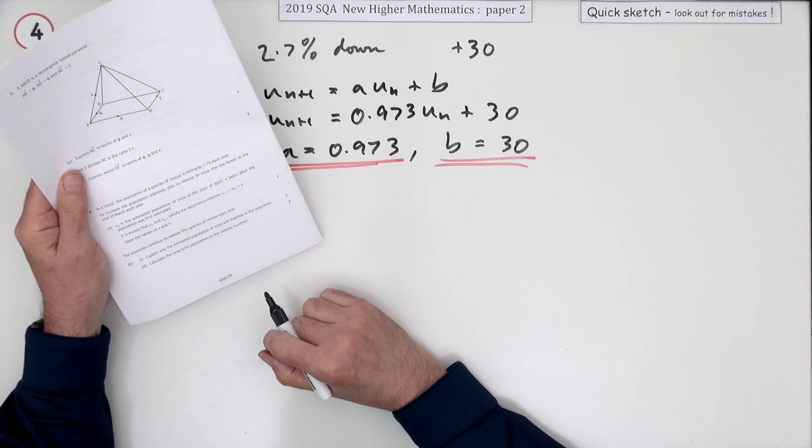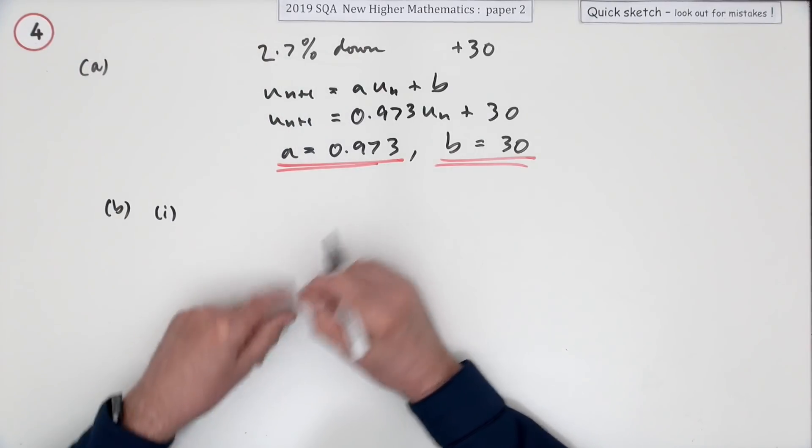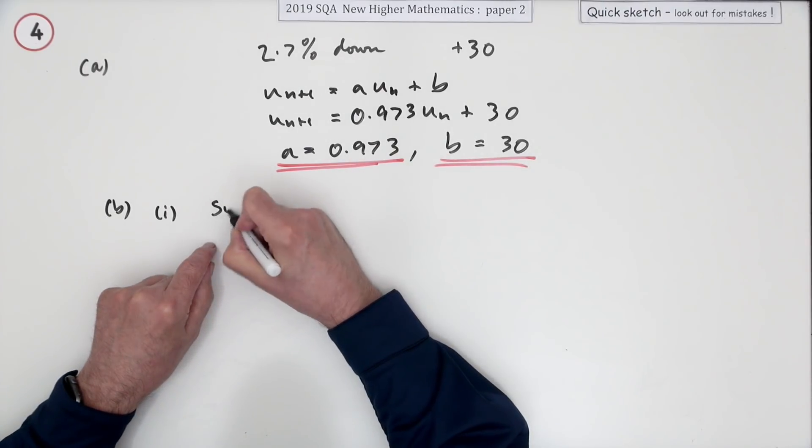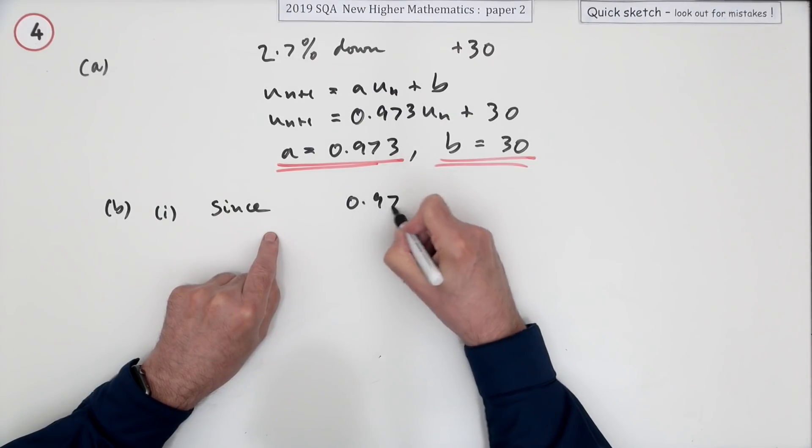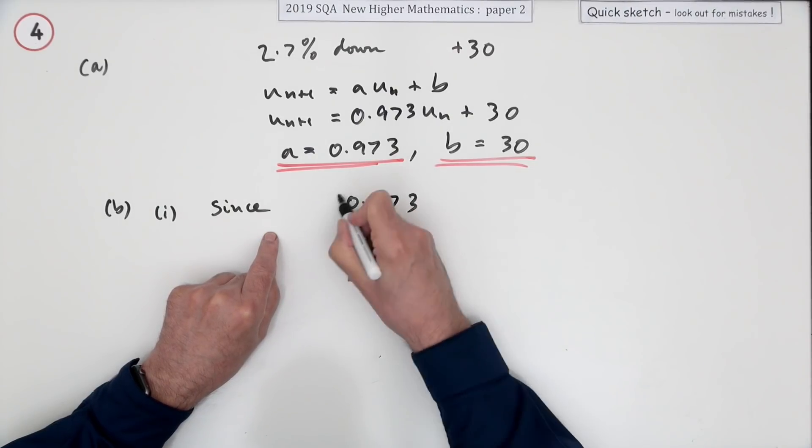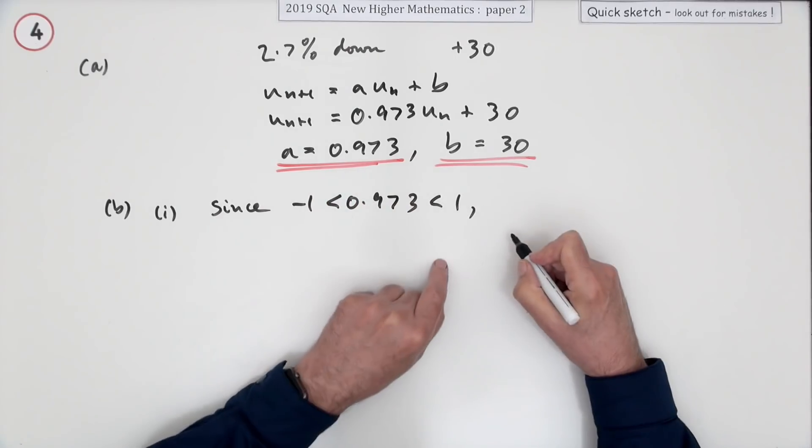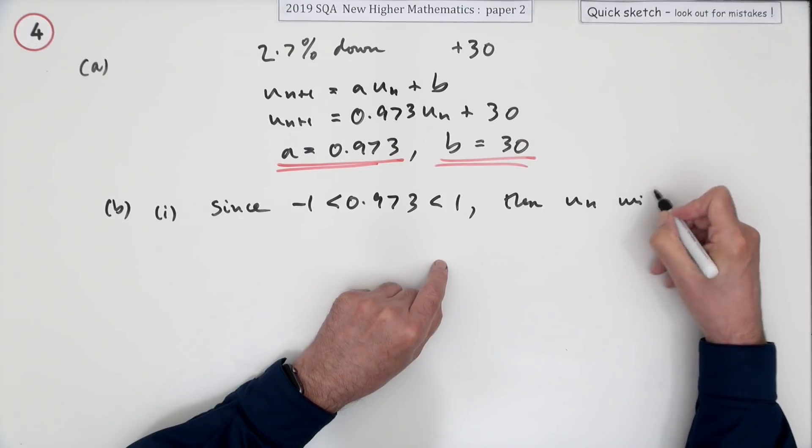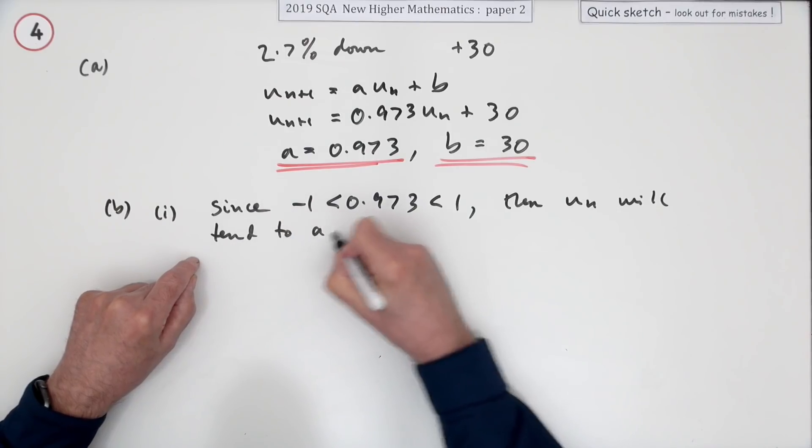Part B: explain why the estimated population will stabilize in the long term. That's just like saying will there be a limit? Yes, since 0.973 is a proper fraction between one and negative one, then UN will tend to a limit or you could say converge as n tends to infinity.